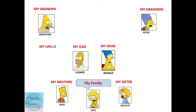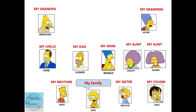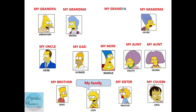Then we have her uncle — su tío — because he is Homer's half brother. And we have her aunts — Lisa has two aunts who are twins — Patty and Selma. Also, Lisa has a cousin — Ling. She also has another grandmother, Mona Simpson — grandma. And another grandfather, Clancy — grandpa.